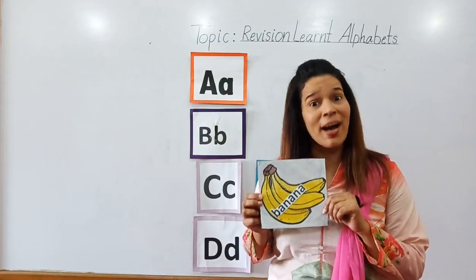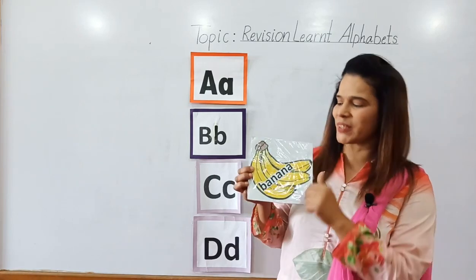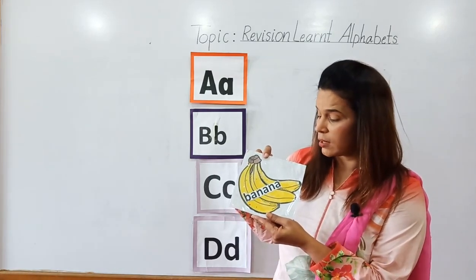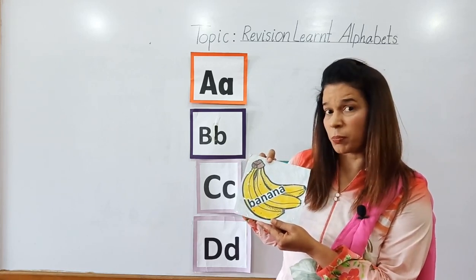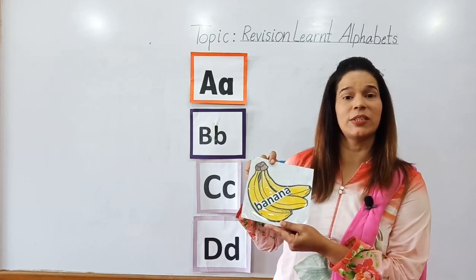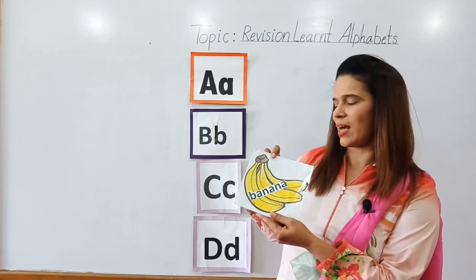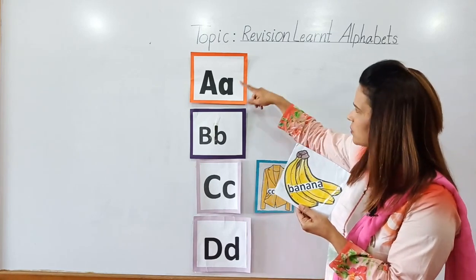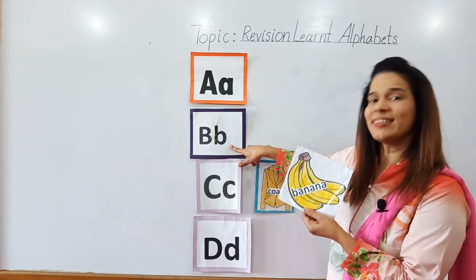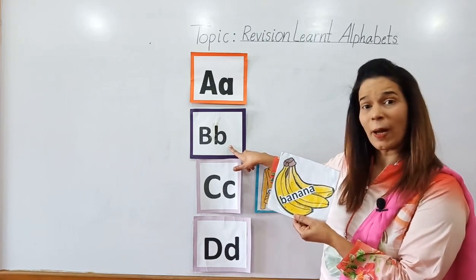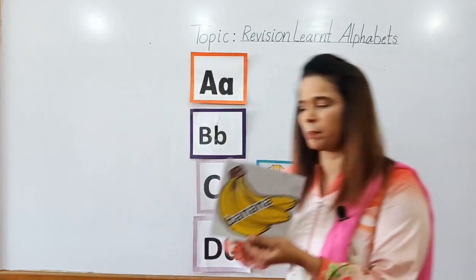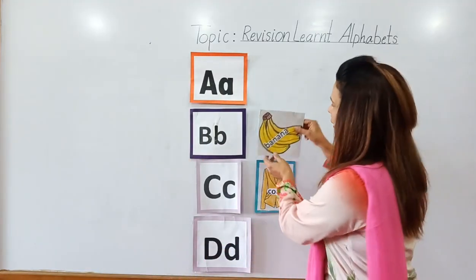Very good. Now what is this? This is a banana. Which sound does banana start with? B sound. Very good. And where is the B sound? This is B sound. B — banana. Very good. Now we will paste banana with the B sound.